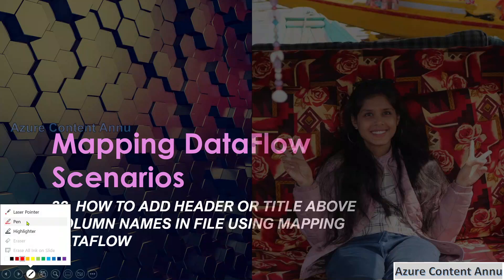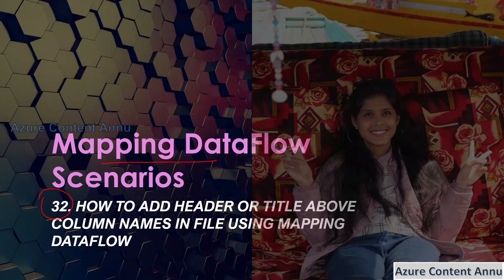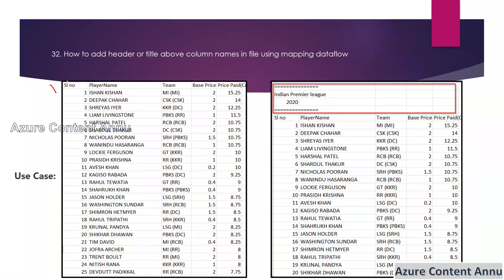Hi friends, welcome to Azure Content. This is part 32 in the mapping dataflow scenarios playlist. In this video we are going to learn how to add headers or a title above column names in a file using mapping dataflow. So let's see our requirement in detail. We have an input file with a list of IPL players, five columns in total: serial number, player name, team, base price, and price paid in crores. The requirement is to add a title above the column names, like 'Indian Premier League 2020'.